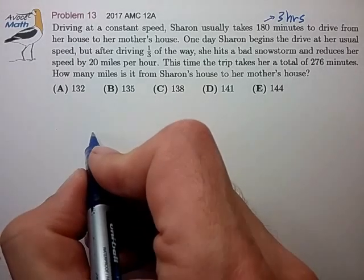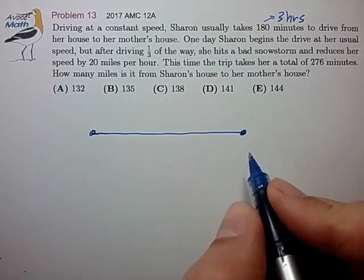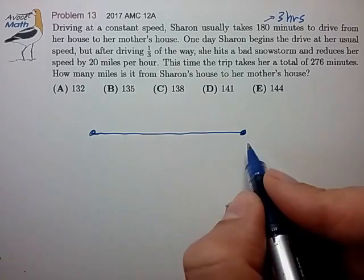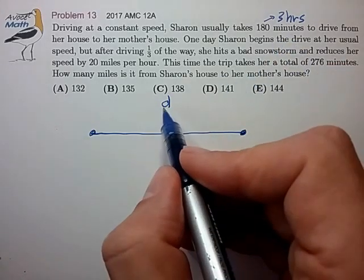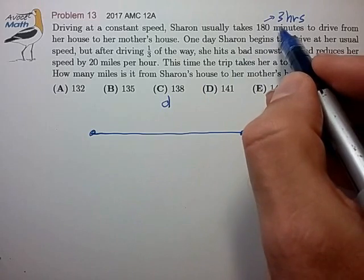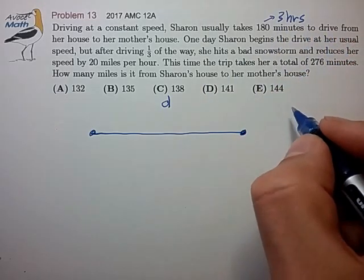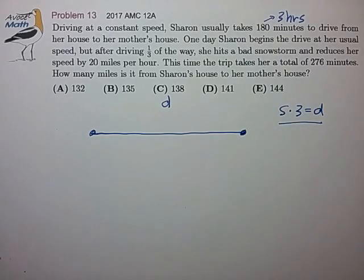I like to make a little picture to remind myself of the information. So, total distance from Sharon to her mother's house is distance D, and we're told on a normal day she can drive that at speed S, and that gets her to her house in three hours. Rate times time equals distance, so that should come in handy at some point.